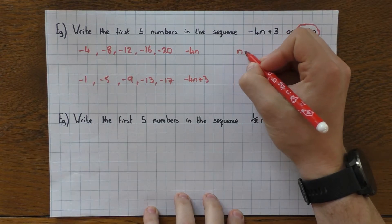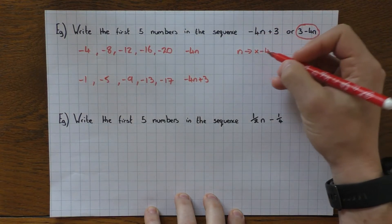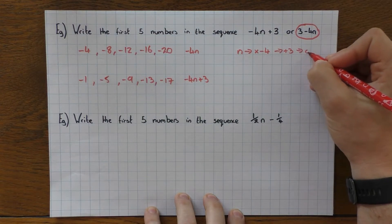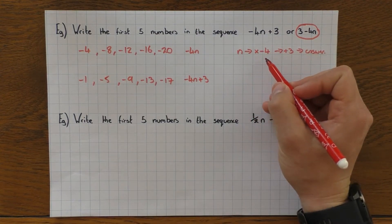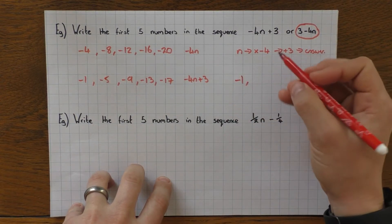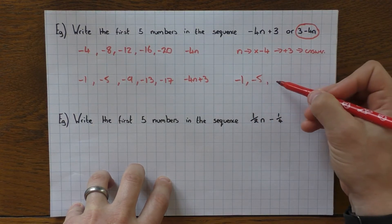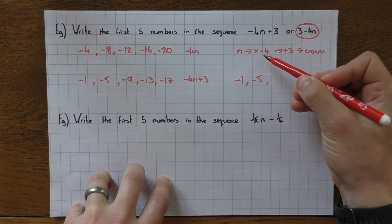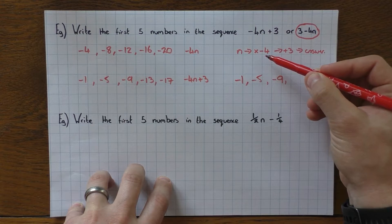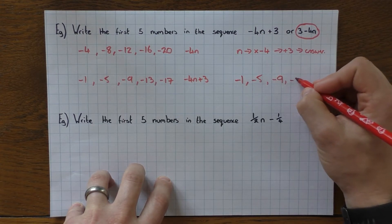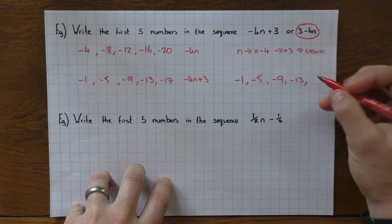Same thing for the flowchart. I've got my n, but this time I times it by minus 4, because it's minus 4n. Then I add 3, and then I get my answer. So for the first term, n would be 1, 1 times minus 4 is minus 4, plus 3 is minus 1. Second number, n would be 2, 2 times minus 4 is minus 8, plus 3 is minus 5. Third number, n would be 3, 3 times minus 4 is minus 12, add 3 is minus 9. Fourth number, n would be 4, 4 times minus 4 is minus 16, plus 3 is minus 13. Fifth number, n would be 5, times minus 4 is minus 20, plus 3 is minus 17.